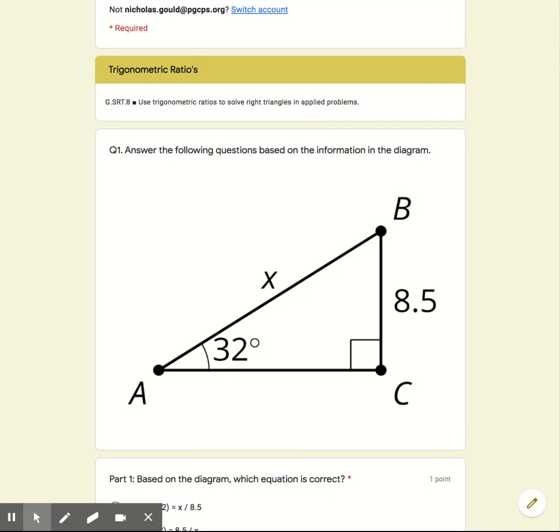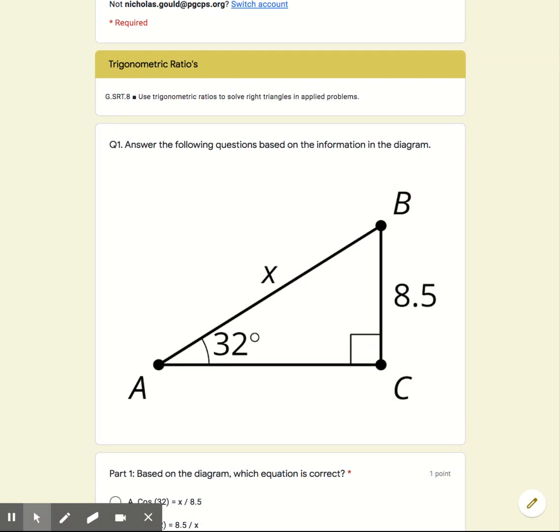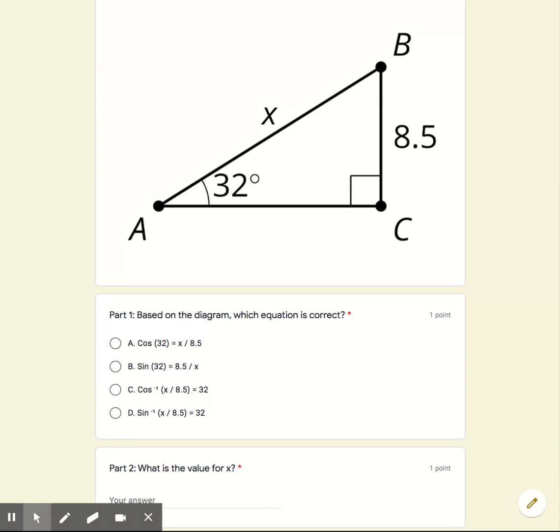The first question says, answer the following questions based on the information in the diagram. So here we have to realize what we're looking at, what we're looking for. We have an angle and two side lengths. It doesn't matter what X is right now because the first question just says, based on the diagram, which equation is correct? And so you're going to want to be able to pay attention to the angle and the side lengths.